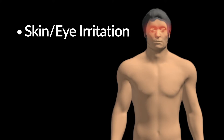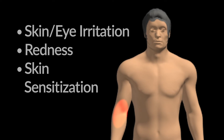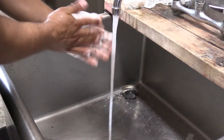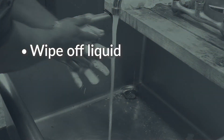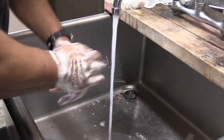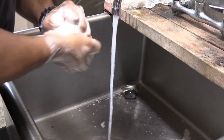Liquid TDI can be irritating to the skin or eyes. Skin contact may result in redness and may also cause skin sensitization, an allergic reaction. Symptoms such as redness, itching, and rash may occur when a sensitized person contacts TDI. If a person has become sensitized, the most prudent course of action is that the individual no longer works with TDI. For skin exposure, first wipe off the liquid, then wash with a polyglycol-based skin cleanser or corn oil. Soap and water may also be used but may be less effective. Always refer to the product's SDS and remove any contaminated clothing.